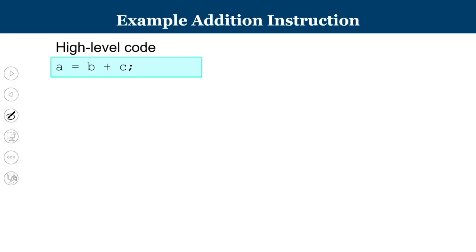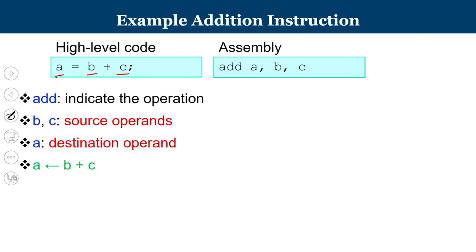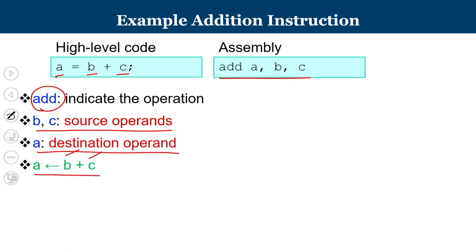Let us consider the example of an add instruction. Consider a high-level language instruction: A = B + C. The contents of B and C have to be added and stored in A. The programmer need not know how it is carried out or what category of instruction is used. In assembly language this is converted to: add A, B, C — where B and C are source operands, A is the destination operand, and 'add' is the mnemonic representing the operation.